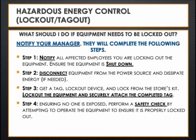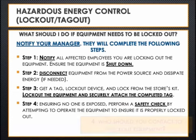Step 3: Get a tag, lockout device, and lock from the store's kit. Lock out the equipment using an appropriate device. Using the examples we saw before, this could mean locking the forklift key in a box or using a lockbox over the plug of the equipment. Complete the tag and secure it in an obvious place, such as the place you would normally turn on the equipment. Step 4: Finally, after checking to make sure no one is exposed, perform a safety check on the equipment by attempting to turn it on or operate it.